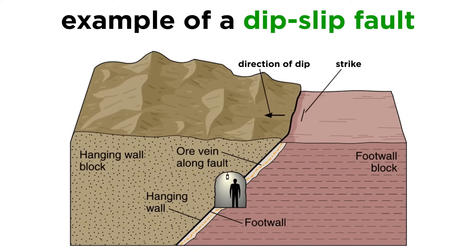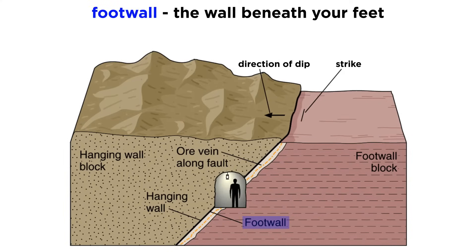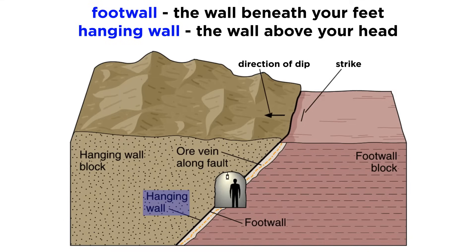In any dip-slip fault, there is a hanging wall and a foot wall. If you imagine drilling a tunnel longitudinally through the fault, when standing in this tunnel, you would be standing on the foot wall, and the hanging wall would be above you.